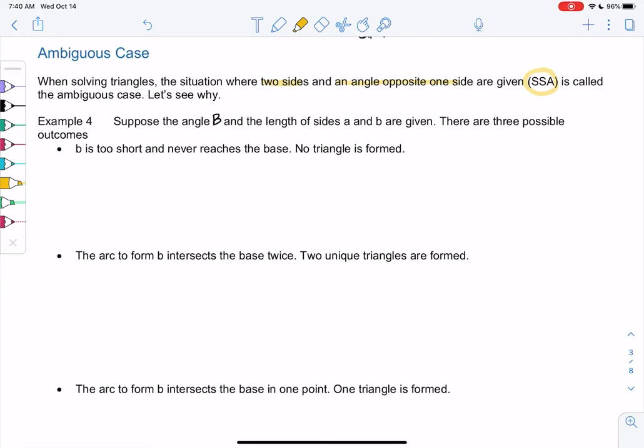So let's suppose we're given angle B, side A, and then side B. So the key is that side B is opposite angle B. Kind of three different things can happen. So we're going to go ahead and draw angle B. So we know angle B. We know side A, so we know the length of this side. This bottom one, we don't know the length of. And then we know the length of side B. So let's say B is given.